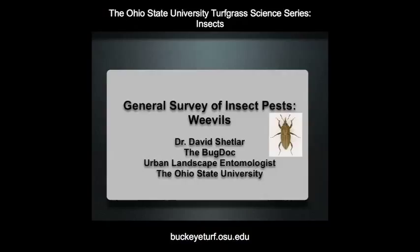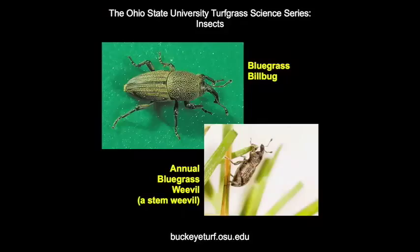Stem weevils and billbugs are common pests of turf grasses around the world. The Argentine stem weevil and the annual bluegrass weevil are examples of stem weevils. The hunting billbug is found around the world infesting warm season grasses, while other species, like the bluegrass billbug, attack other grasses.